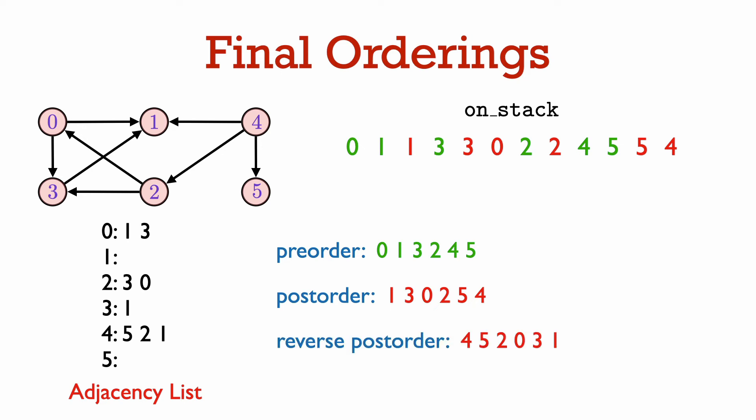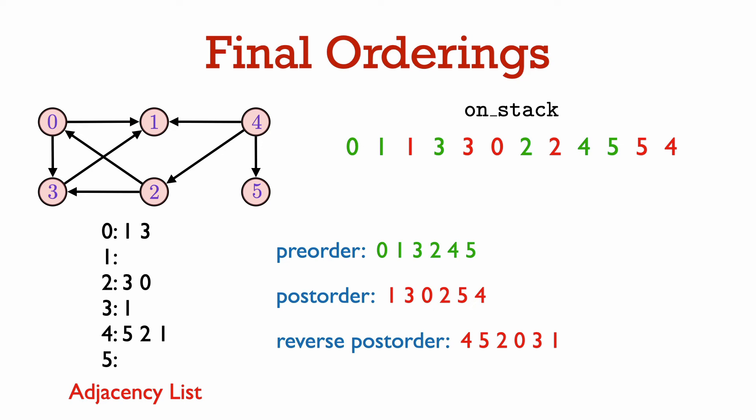The reverse postorder is just the reverse of the postorder: 4, 5, 2, 0, 3, 1. By keeping track of when DFS visit starts and finishes, we get all of preorder, postorder, and reverse postorder. We can see that the reverse postorder actually gives a topological sort — and this is actually the same topological sort used at the beginning of the video.